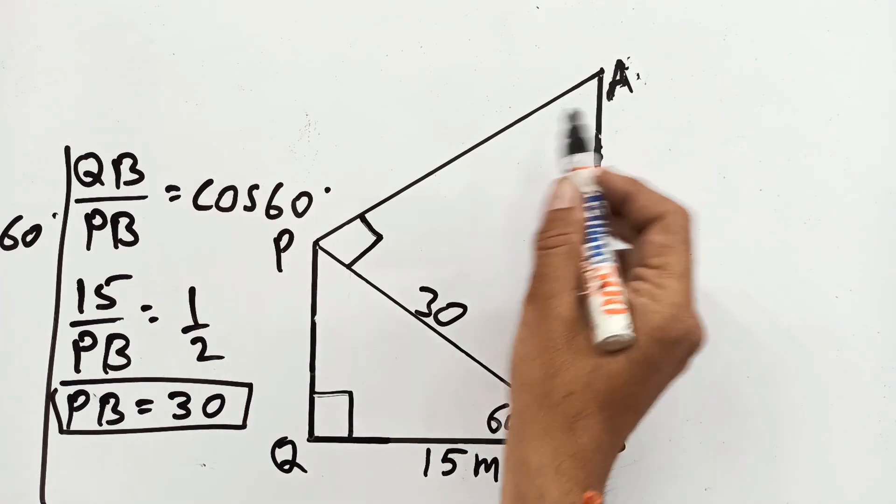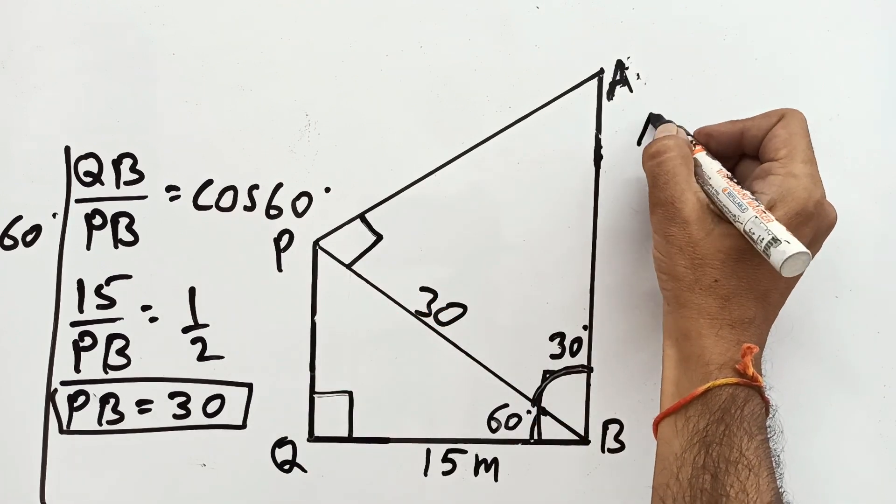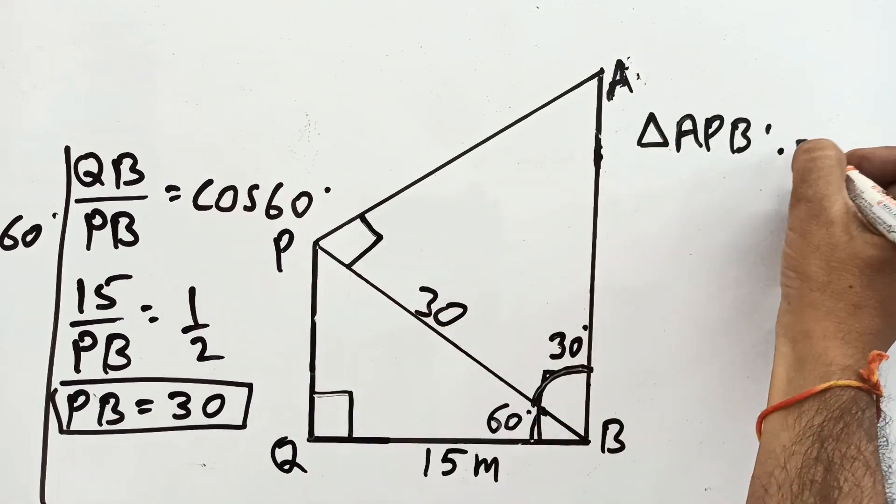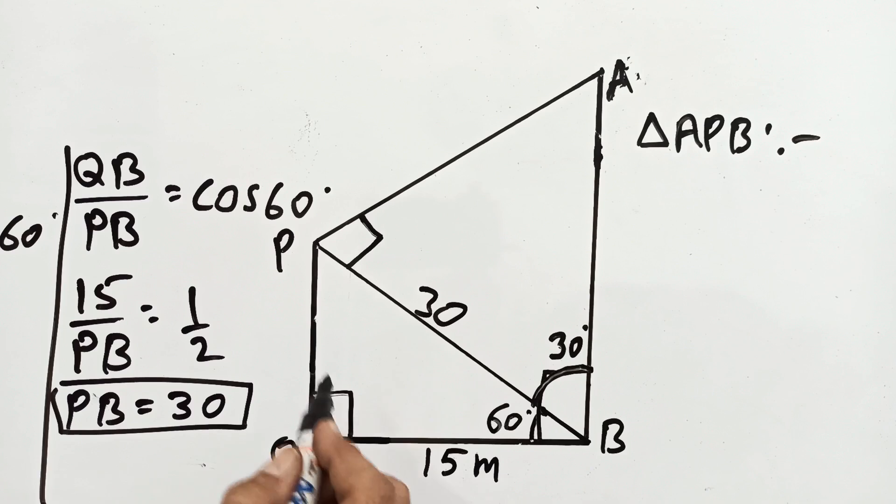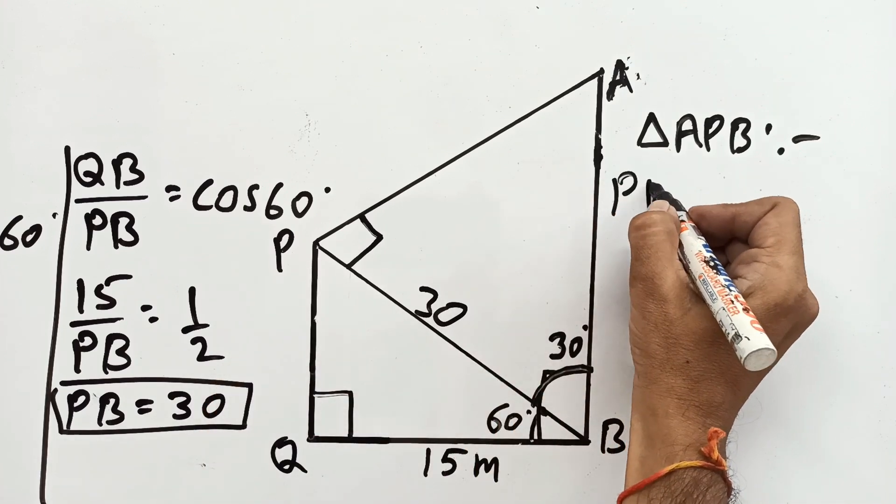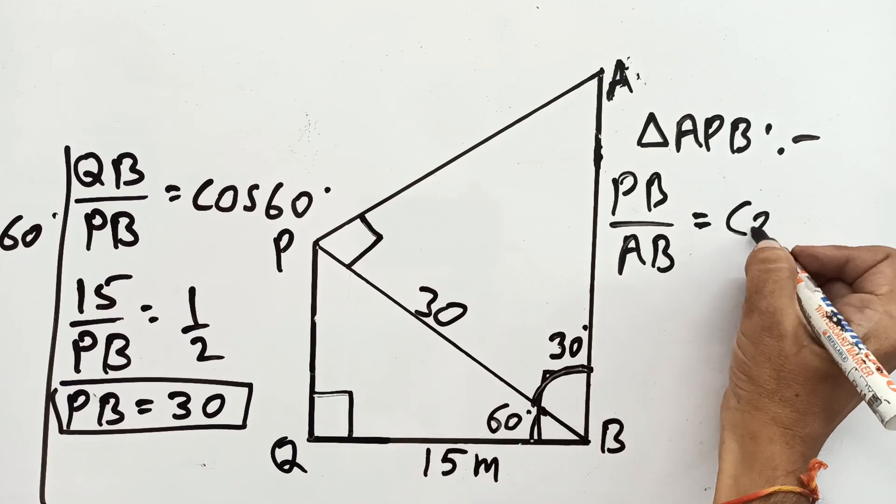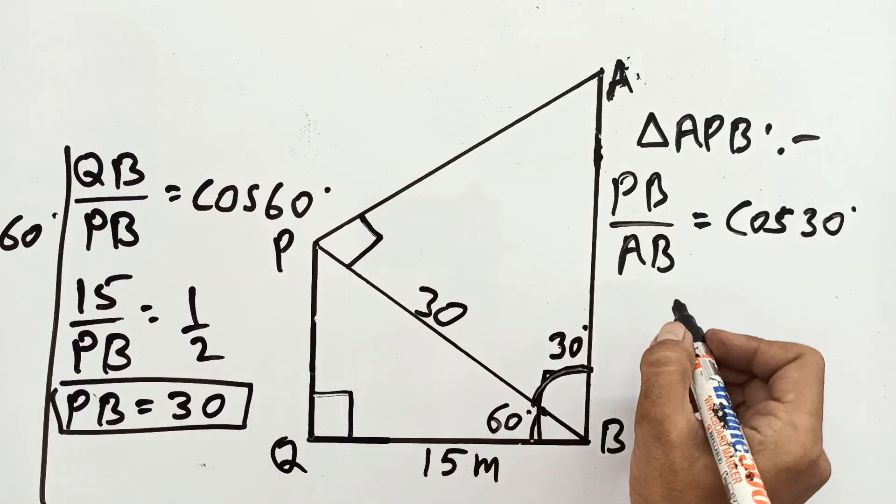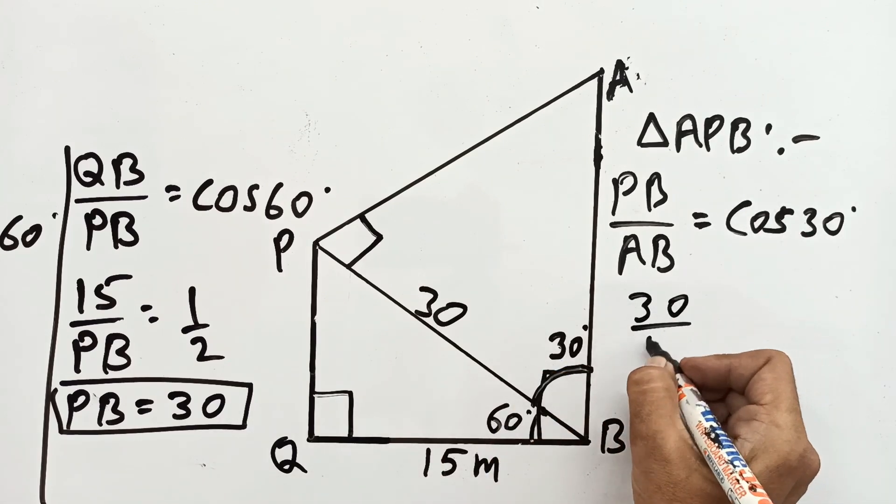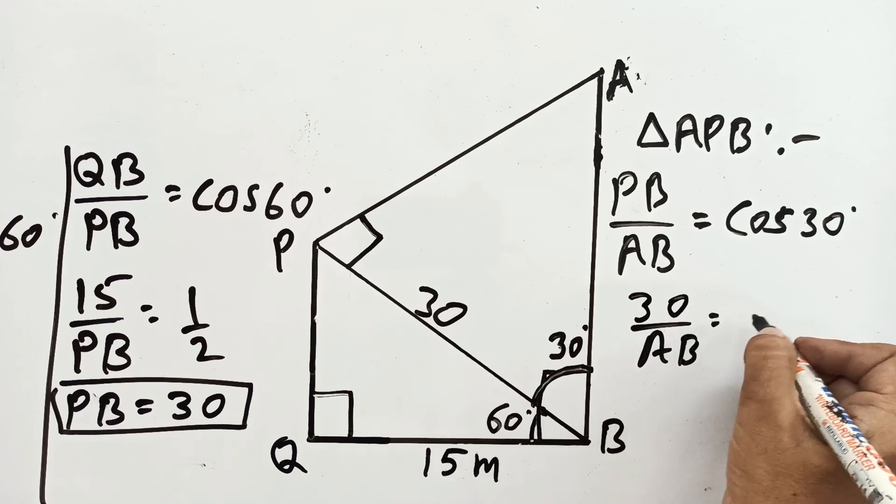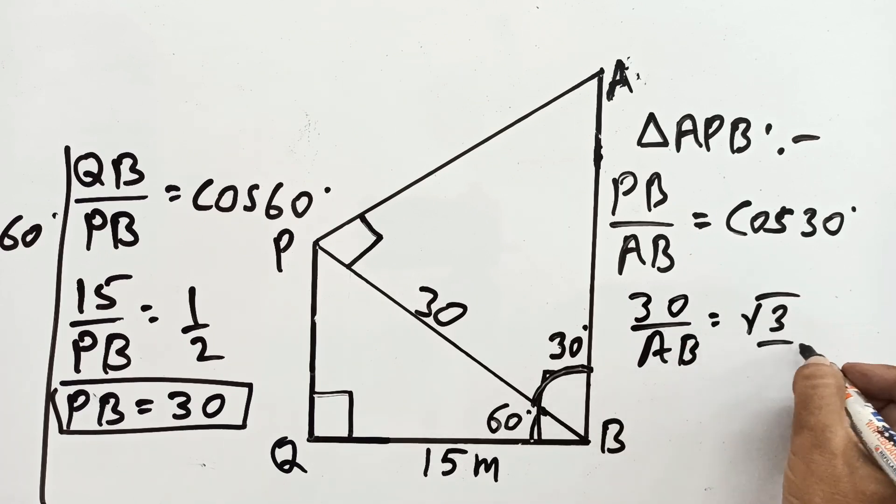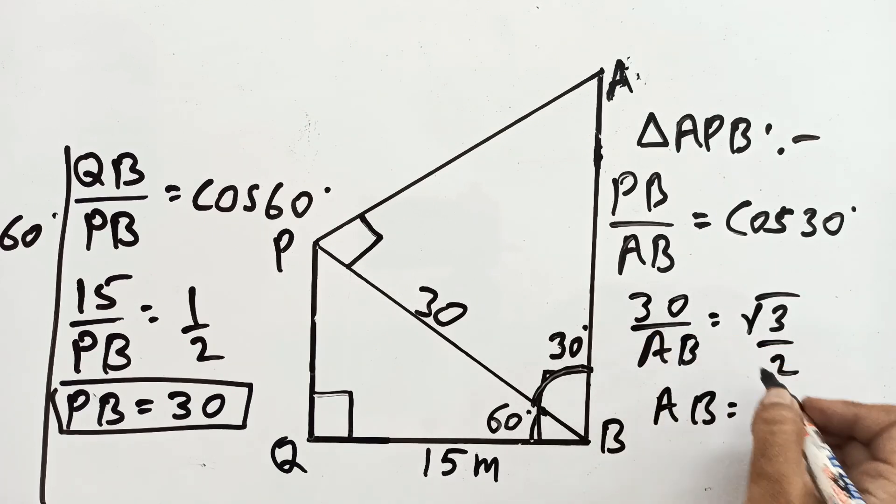Now in triangle APB, base upon hypotenuse, PB upon AB is equal to cos 30. This is PB equals 30. Cos 30 is root 3 upon 2. AB is 60 upon root 3.